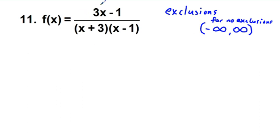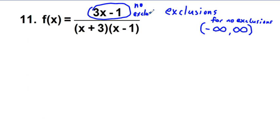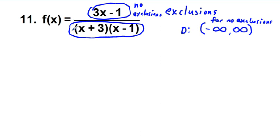In the numerator, we check our numerator. We have 3x minus 1. That is a polynomial-only expression, so for this numerator there are no exclusions. If we were just taking the domain based on the numerator, we would have all real numbers — negative infinity to infinity. But anytime we have a variable in the denominator, there's a very good chance we're going to have exclusions.